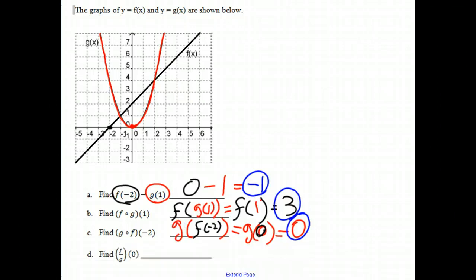And our final problem, we're going to find f divided by g of 0. And once again, what that means is f(0) divided by g(0). So now we simply have to find f(0). We'll make that g(0) red to be consistent with our color coding.